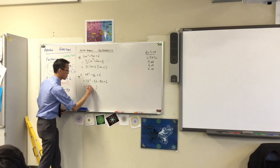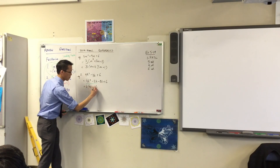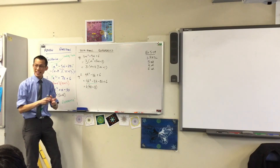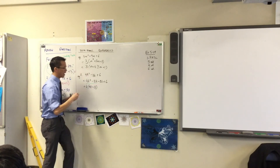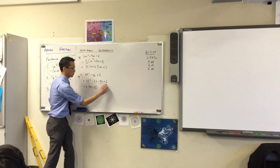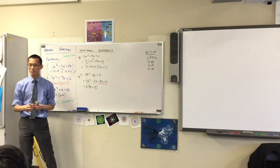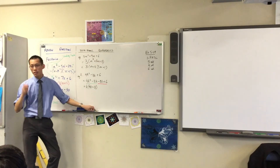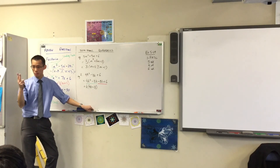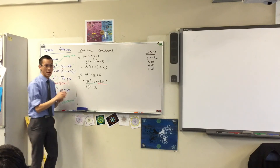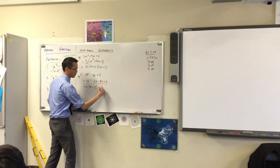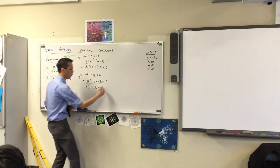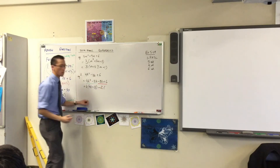What do you get left with when you divide? 4k minus... Then you look at the other pair and ask: is there a common factor? And the answer is yes. I could say 2, but in this case I'm actually going to say negative 2.